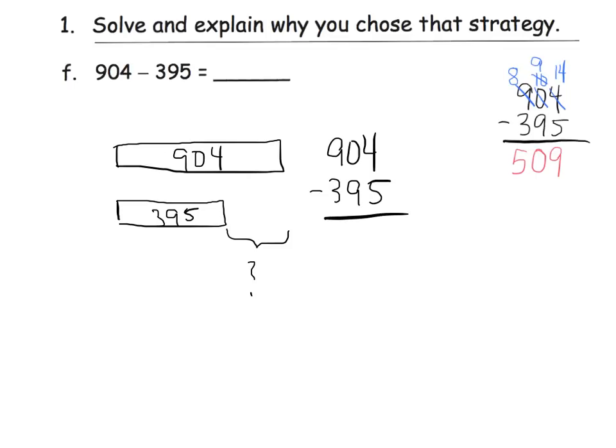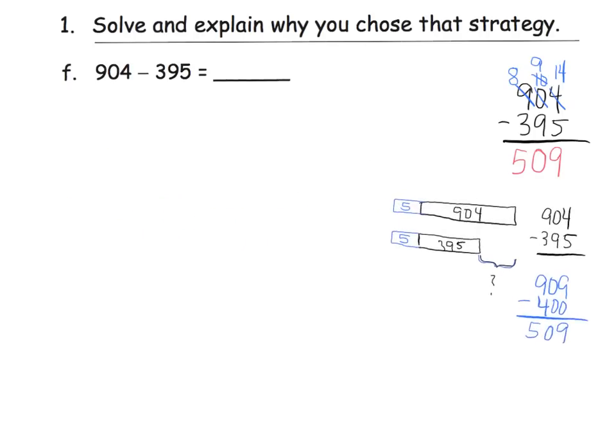So a different way is, since 395 is really close to a landmark number, it's really close to 400, let's just add an extra five and add an extra five to both tapes. So our gap is still the same. But instead of doing 904 minus 395, our problem becomes 909 take away 400, which is a far simpler problem to do.